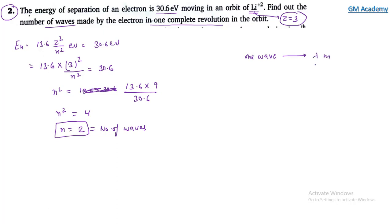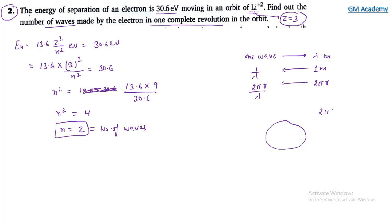The number of waves is given by 2πr / λ. Using de Broglie wavelength λ = h / mv, and angular momentum mvr = nh / 2π, we substitute to get the number of waves equal to n.